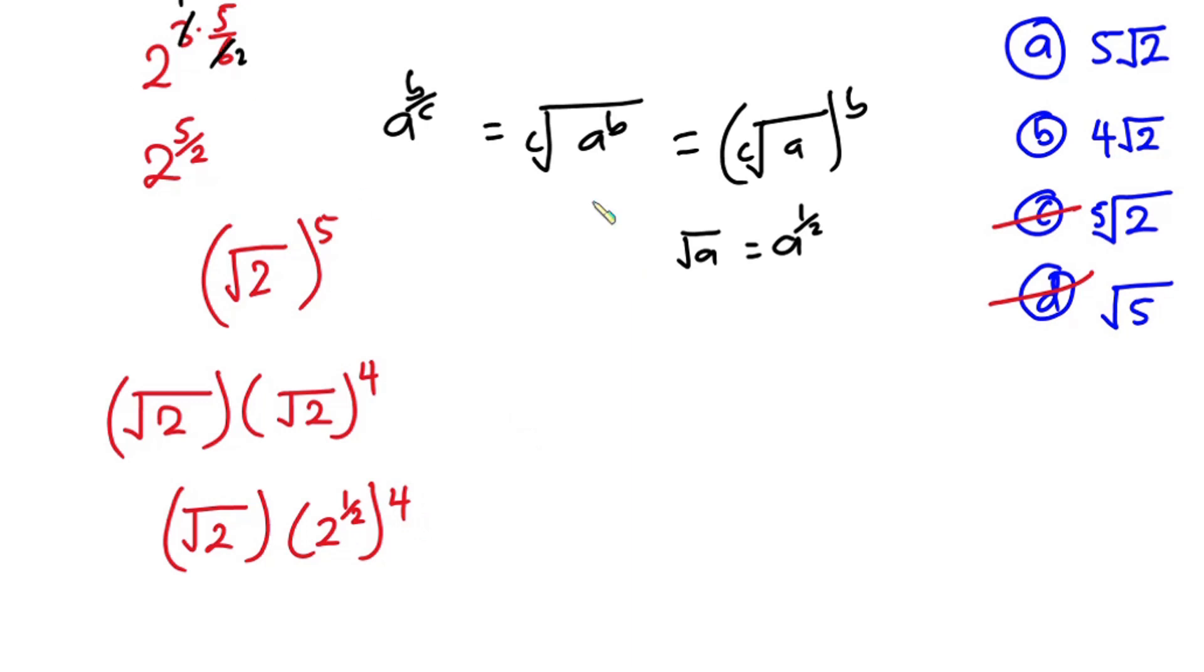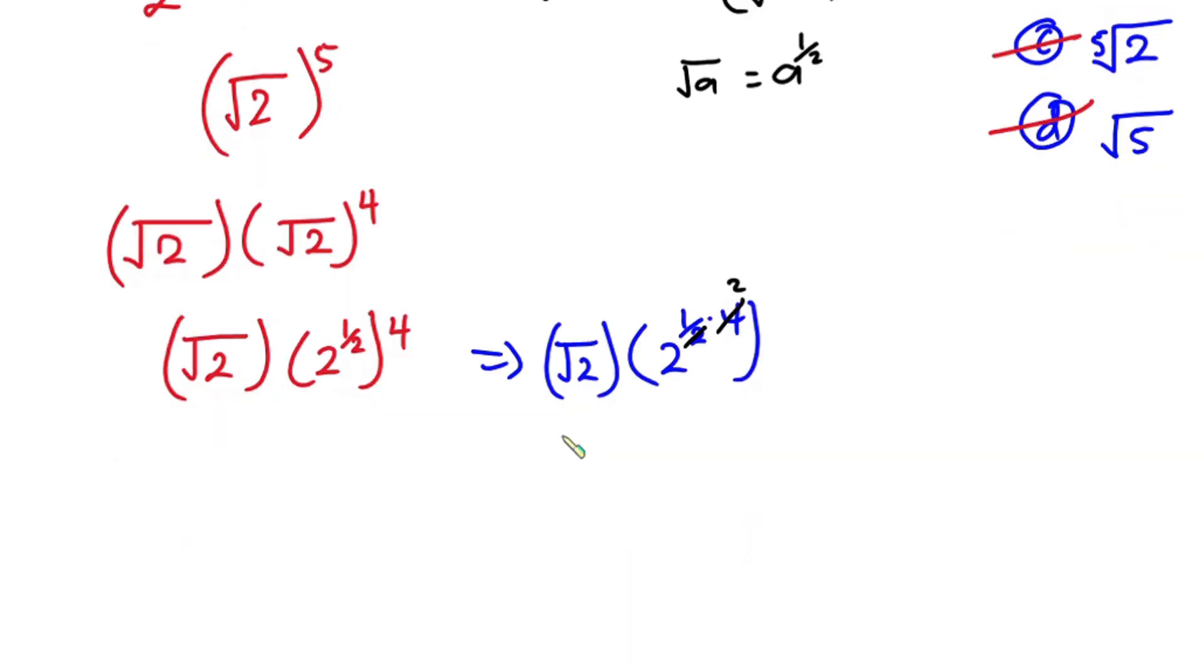Now from the first rule from indices that we just did, we can multiply this one by this straight away. So we have square root of 2 times 2 to the power 1 over 2 times 4. And straight away 2 goes into 2 one time and then goes into 4 two times. So we have square root of 2 times 2 to the power 2. And 2 to the power 2 is nothing but 4 then times square root of 2.